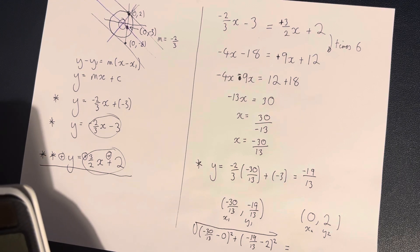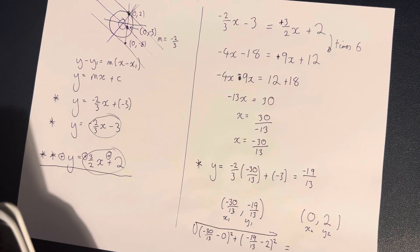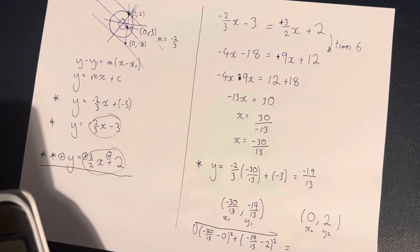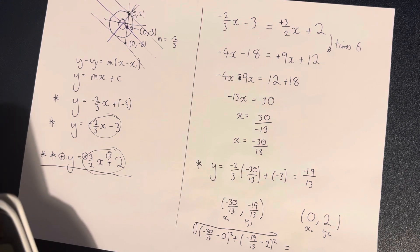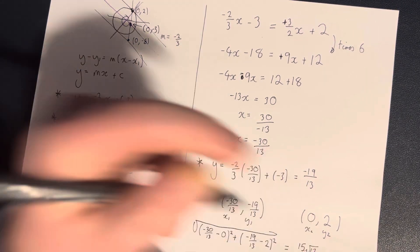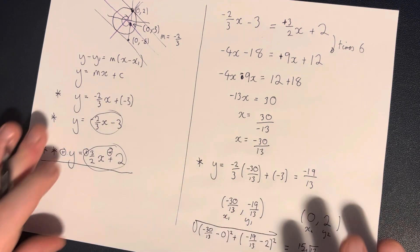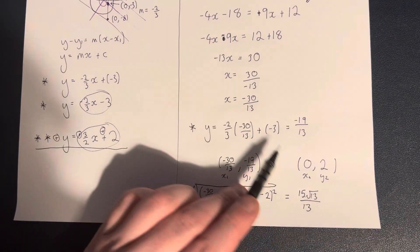The radius is equal to the square root of, start bracket, minus 30 over 13, minus 0 squared, plus start bracket, minus 19 over 13, minus 2 squared, which is equal to 15 root 13, all over 13. I think this is where we were going with our notes earlier. This is the numbers that we ended up with in class.